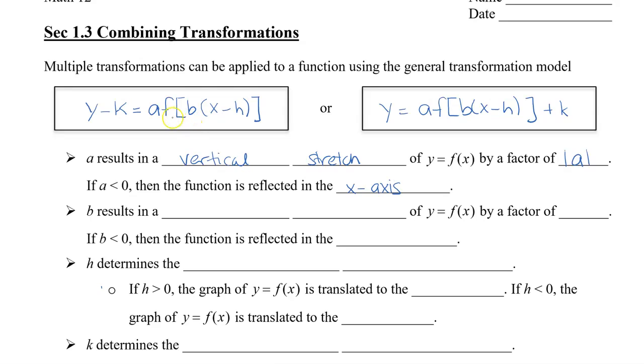The b that's inside the brackets, that's after the f, results in a horizontal stretch of y equals f of x by a factor of one over b. And again I'm going to put absolute values here to not talk about the negative sign because we're going to talk about that separately. So that if b is less than zero the function is also reflected in the y-axis.